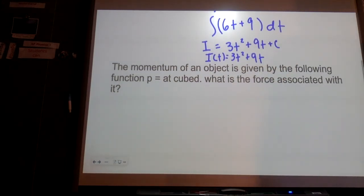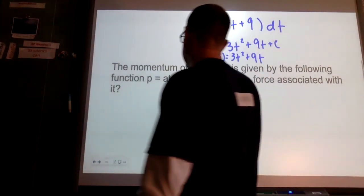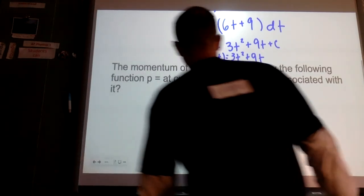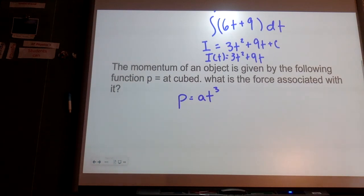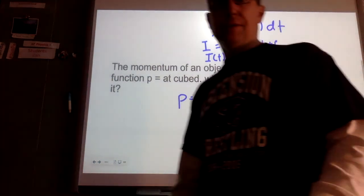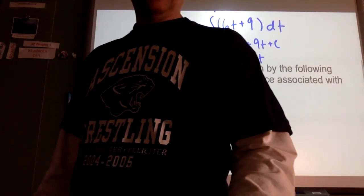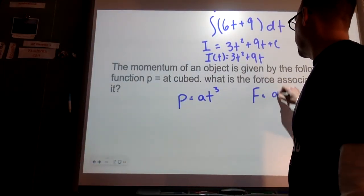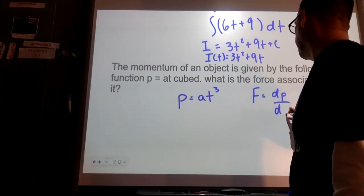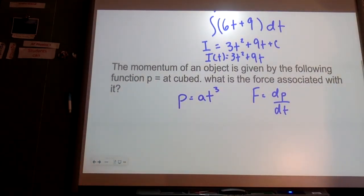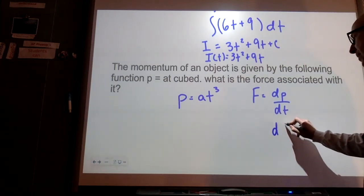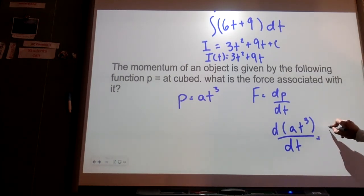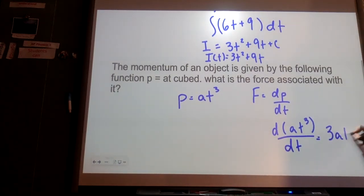The momentum of an object is given by the following function. P equals AT cubed. What is the force associated with it? So F is going to be equal to dp dt. And so I'm going to have the derivative of AT cubed with respect to T. And so this should be 3a t squared.